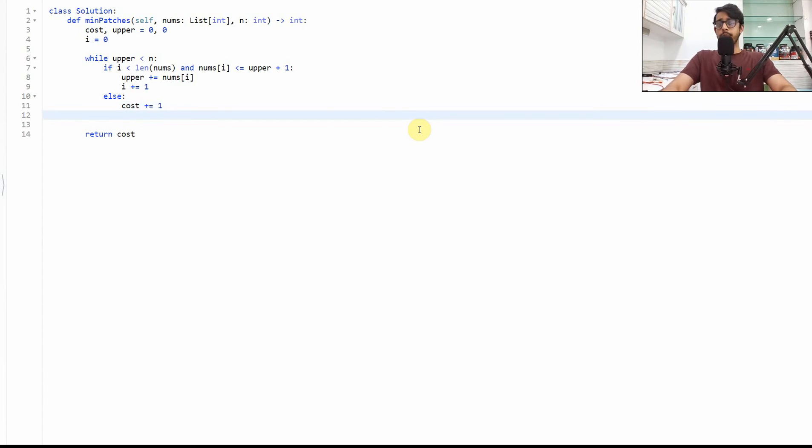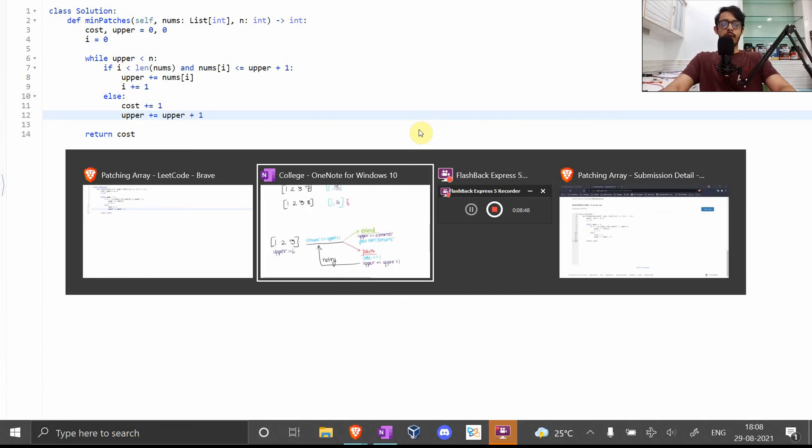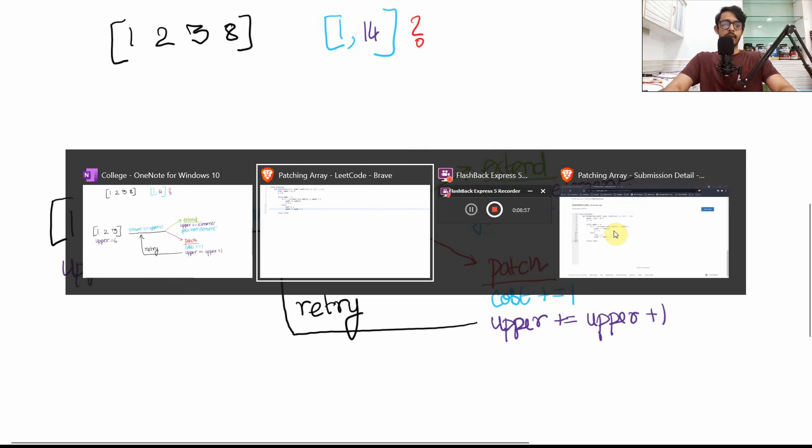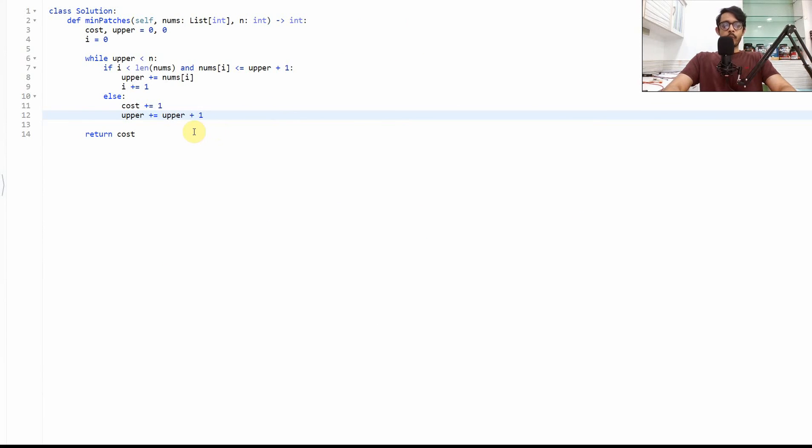Now else, what do we do? Well obviously in this case we need to patch this up so cost goes up by one. At the same time upper gets increased by whatever element we have patched. The element we are going to patch is upper plus one. And so this follows the entire condition. We're going to retry and try out the if statement again and only if it succeeds we are going to go to the next element. So on and so forth we can go over this entire thing.